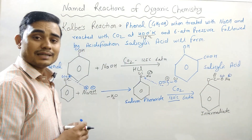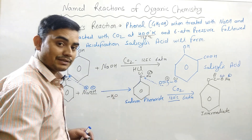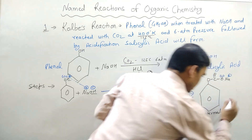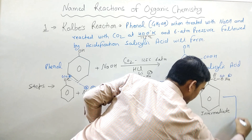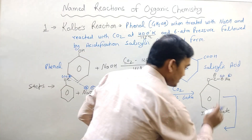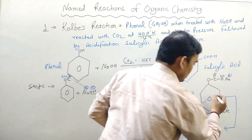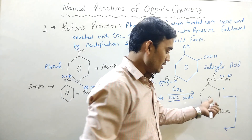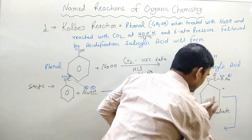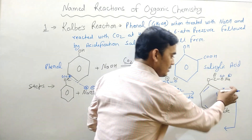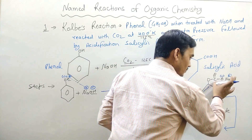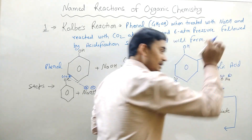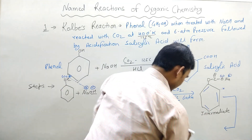Since the intermediate is unstable, it gets rearranged. In the benzene ring there is a hydrogen molecule, and after rearrangement this carboxylate assembly gets transferred to the ortho position of the benzene ring while this hydrogen molecule transfers to the oxygen.